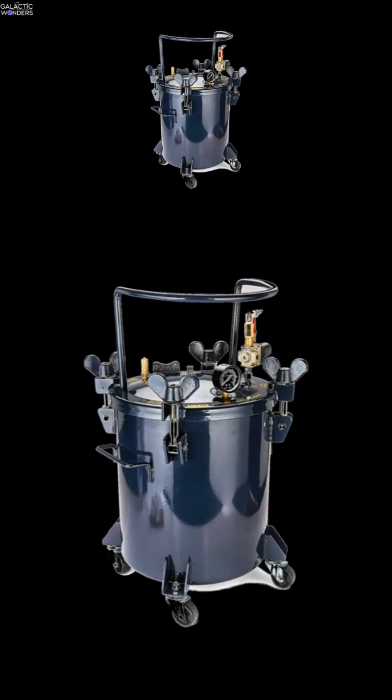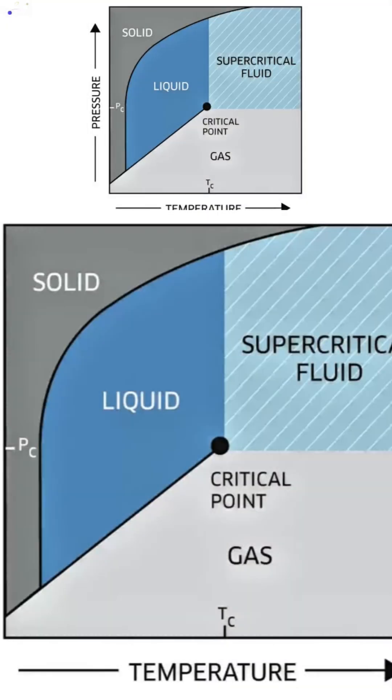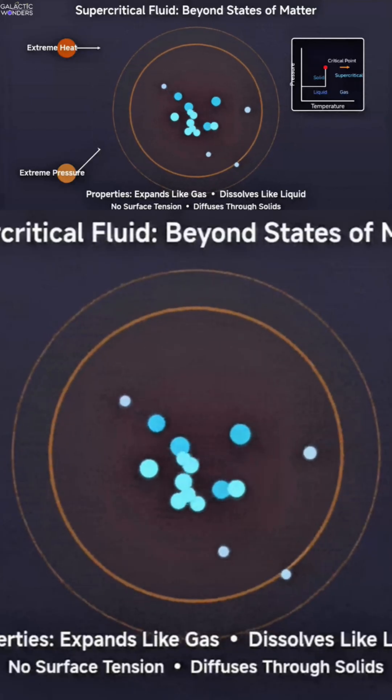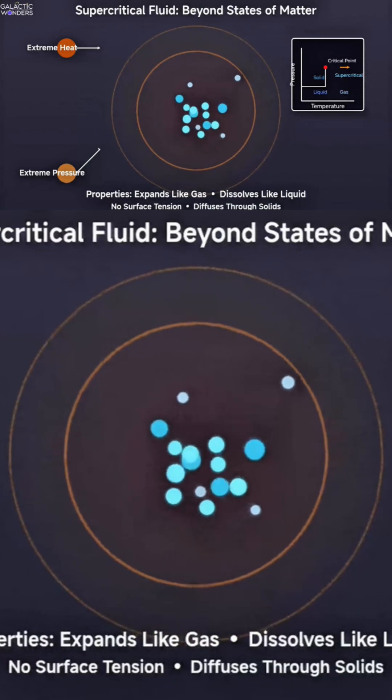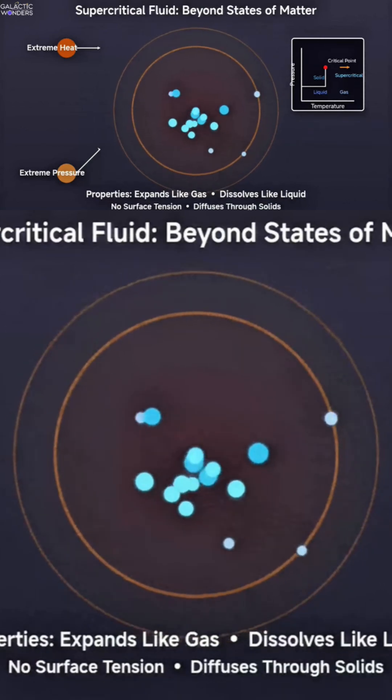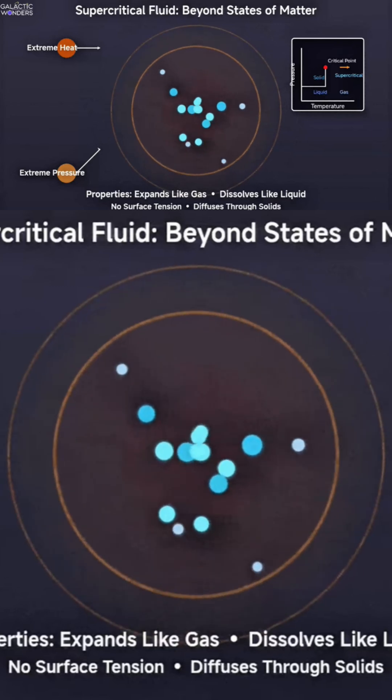If you could see inside a pressure chamber with liquid CO2 on the bottom and gaseous CO2 on top, as you crank up the heat and pressure, something bizarre happens. The boundary between them doesn't boil away. It just vanishes. The distinction between liquid and gas literally stops existing.